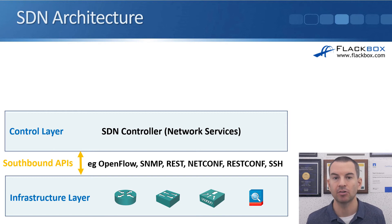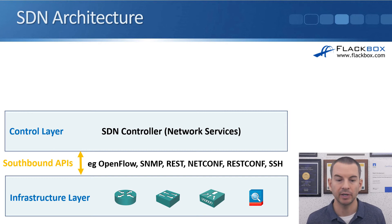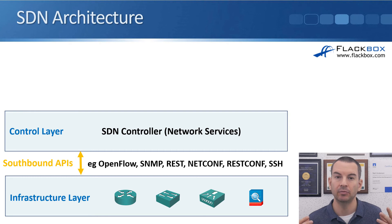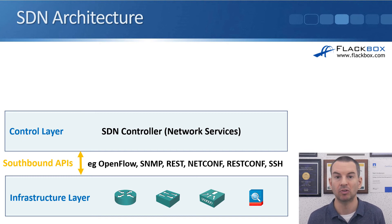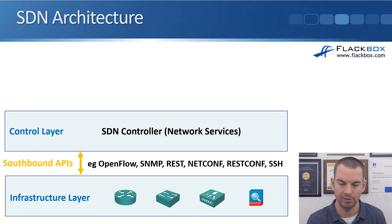The southbound APIs could be using OpenFlow, which was one of the earlier SDN protocols and is open source. Other ways the SDN controller can control the devices include SNMP, a REST API, NetConf, RESTConf, or SSH. This depends on the particular implementation. Often controllers can use different protocols and will use whichever one is supported by the particular device they are managing.